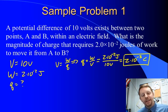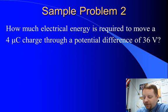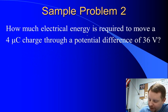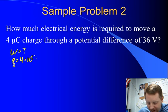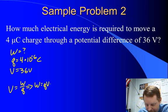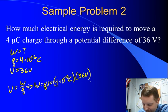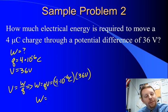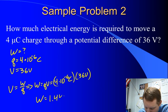Let's take a look at another one, this time solving for work or energy. How much electrical energy is required to move a 4 microcoulomb charge through a potential difference of 36 volts? Our charge is 4 microcoulombs, or 4 times 10 to the minus 6 coulombs, and our potential difference is 36 volts. Using V equals W over Q and solving for W: W equals QV, which is 4 times 10 to the minus 6 coulombs times 36 volts, giving us 1.44 times 10 to the minus 4 joules.